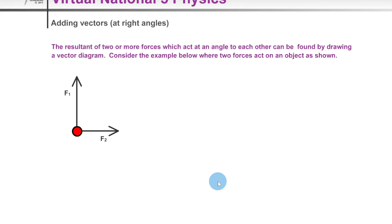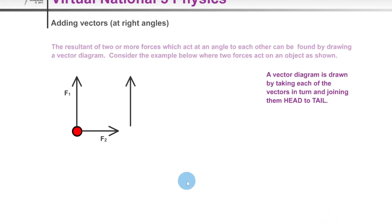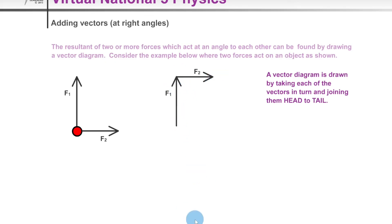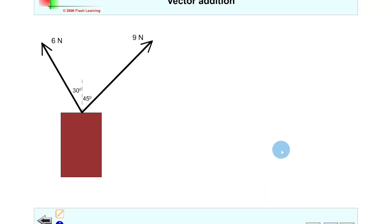For vectors at right angles, consider an object with two forces F1 and F2 acting on it. Currently the two vectors are not joined nose to tail — both tails are joined to the object. To find the resultant force we add them nose to tail: take the F1 vector along and then place the F2 vector so its tail joins the nose of F1. We then draw the resultant from the starting point to the finishing point, using two arrows to distinguish it from the individual vectors.